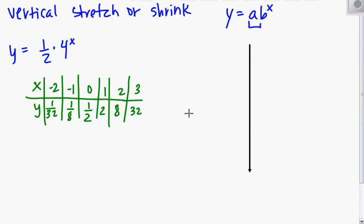And again, we're going to graph our function. We're going to start at negative 2, 1 thirty-second, negative 1, 1 eighth, 0, 1 half, 1, 2, 2, 8, 3, ooh, 32, way up there. And draw your curve. And last but not least, we label our function.